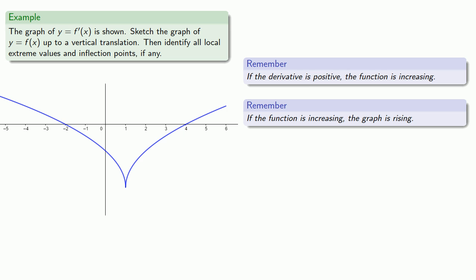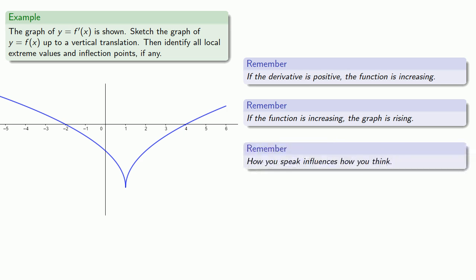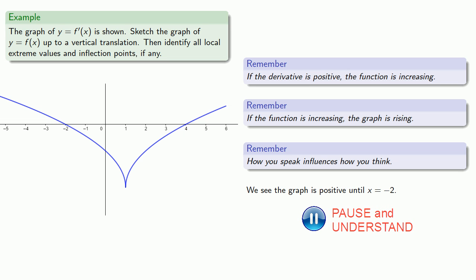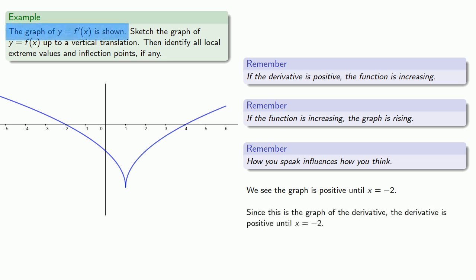A useful idea in general: how you speak influences how you think. So you want to be very careful about talking about the derivative and the graph, and make sure you identify which one you're talking about. We see that the graph of f prime is positive until x equals negative 2. Since this is a graph of the derivative, this means that the derivative is positive until x equals negative 2, and so the graph of y equals f of x is increasing until x equals negative 2.